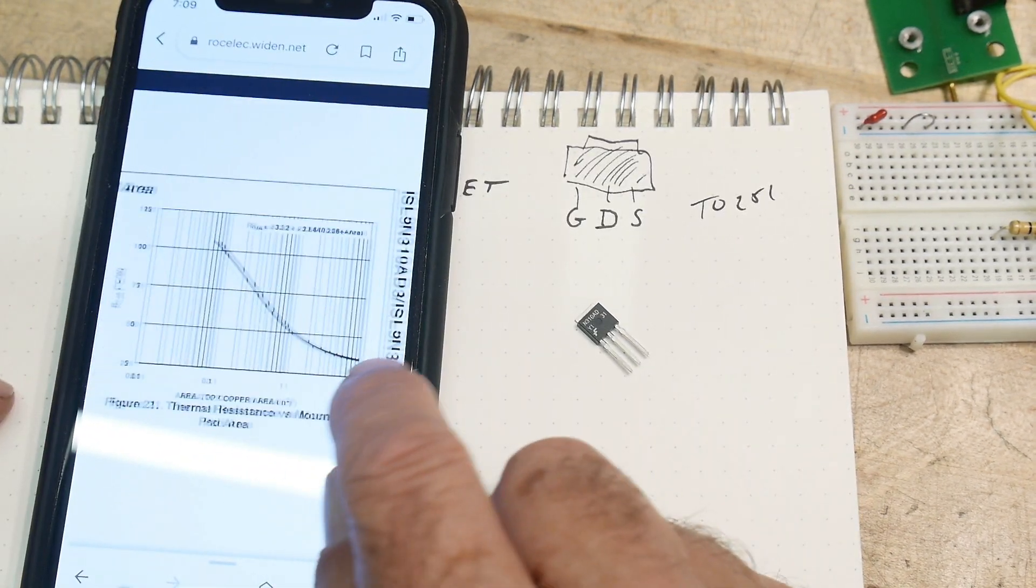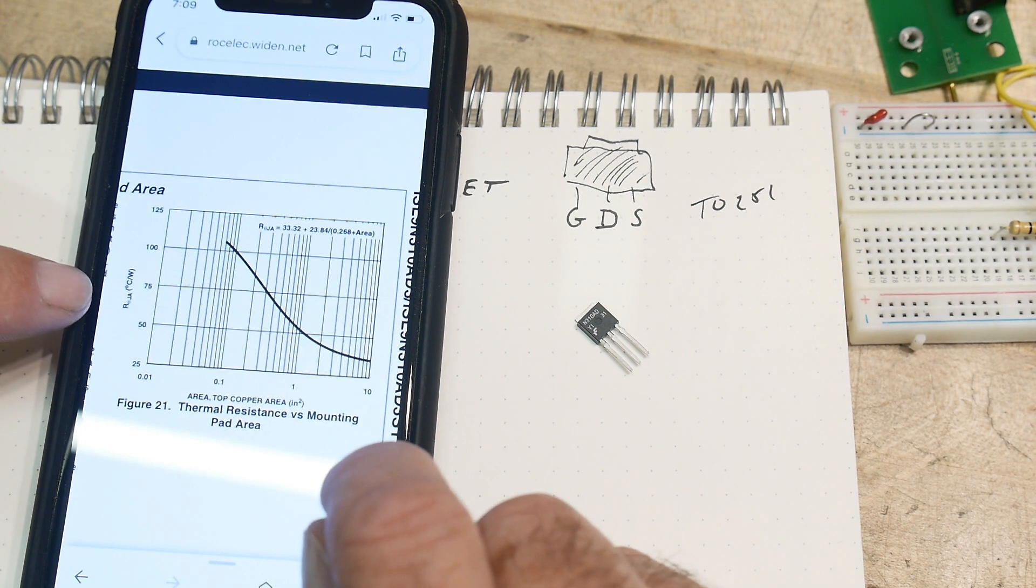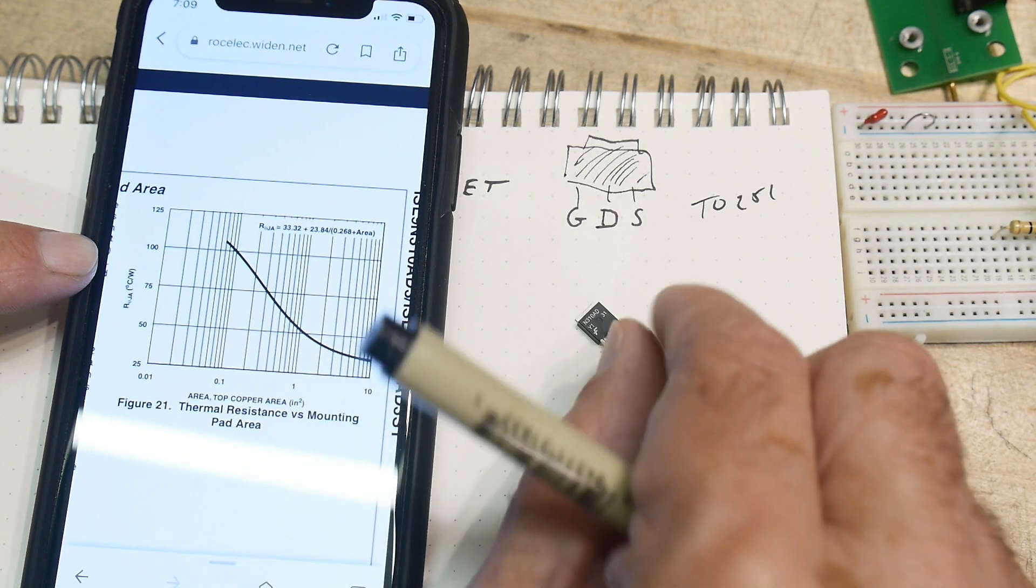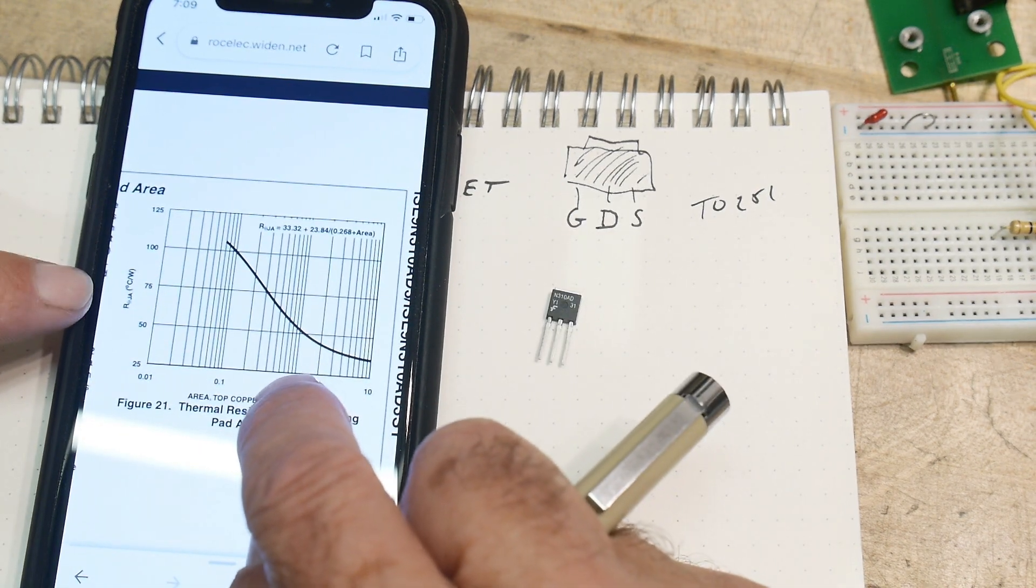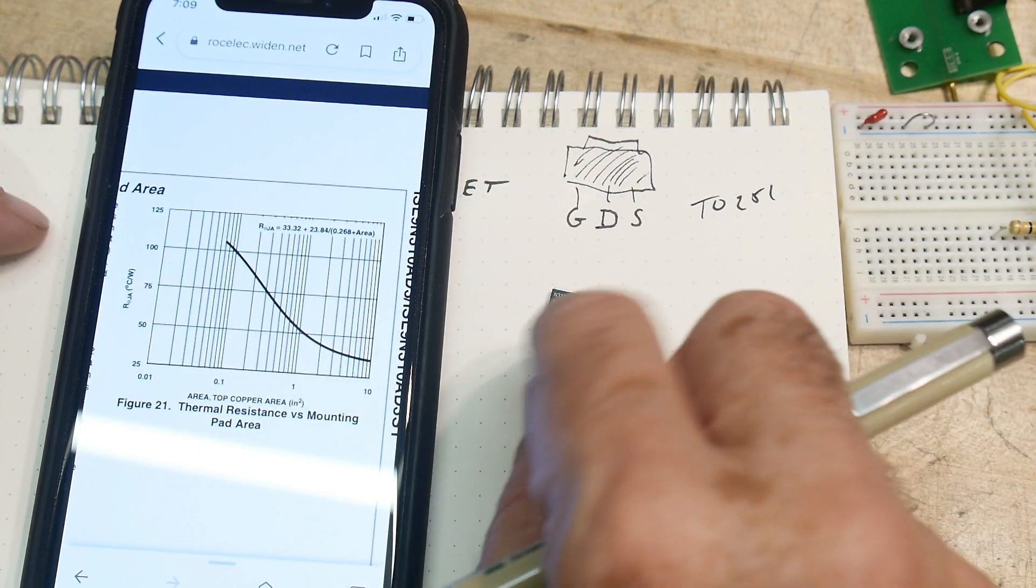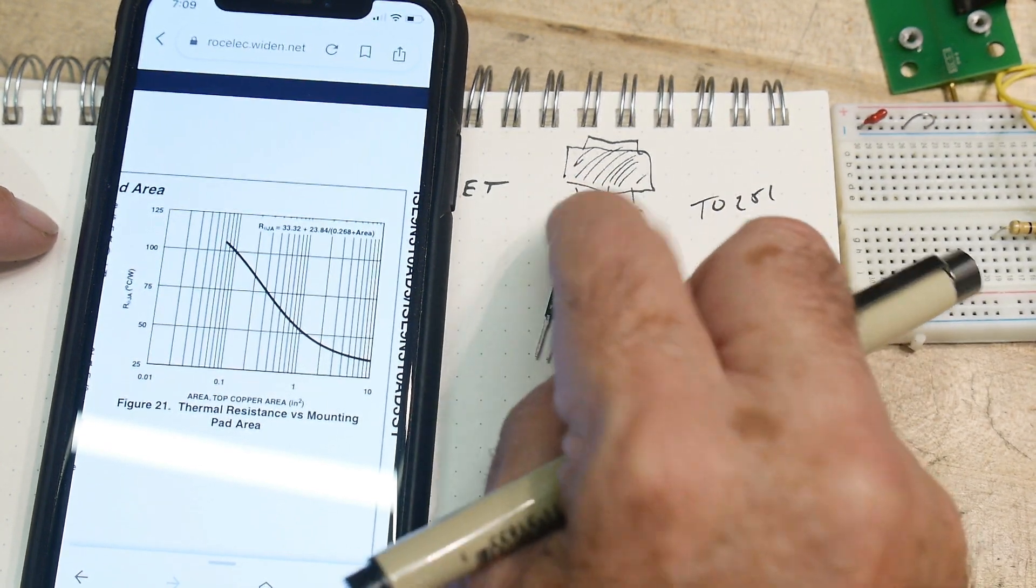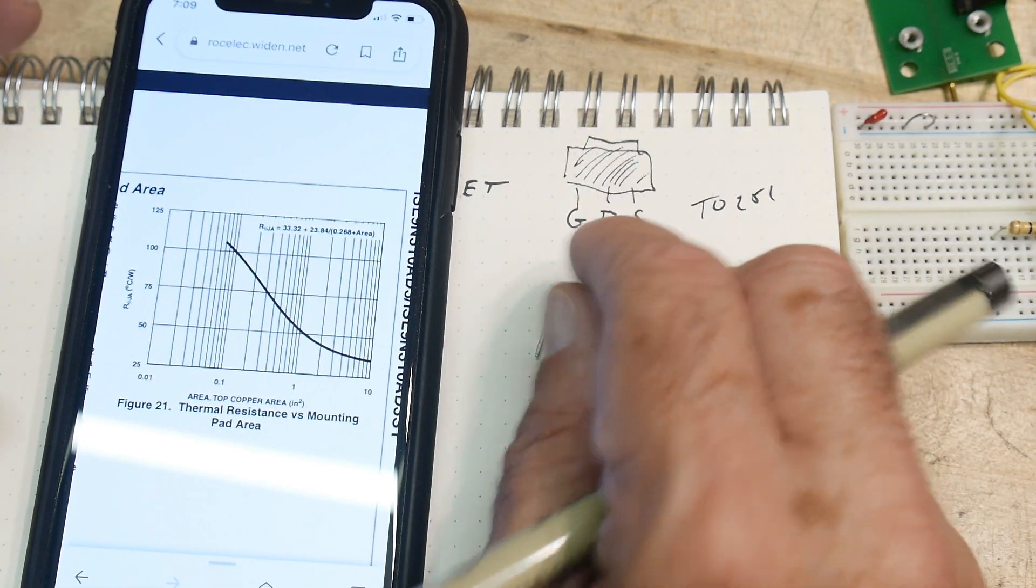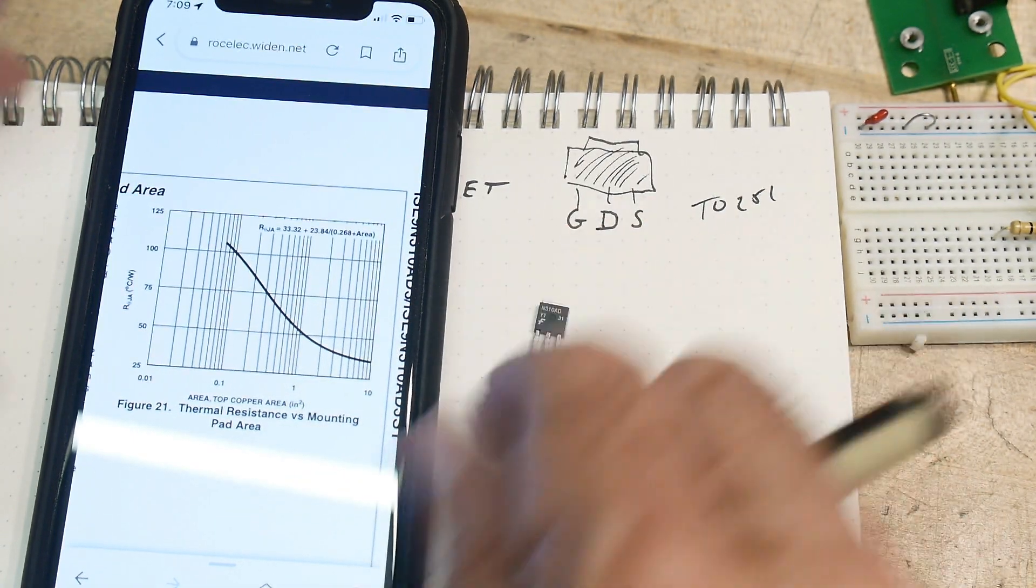So this is a graph of the degree C per watt when this thing is mounted on, let's say, one square inch of copper. So when you're laying out a PC board with these types of devices, oftentimes just the copper pour on the board is the heat sink. And this is the calculation for that. And so we'll see how mine's constructed here a little bit.